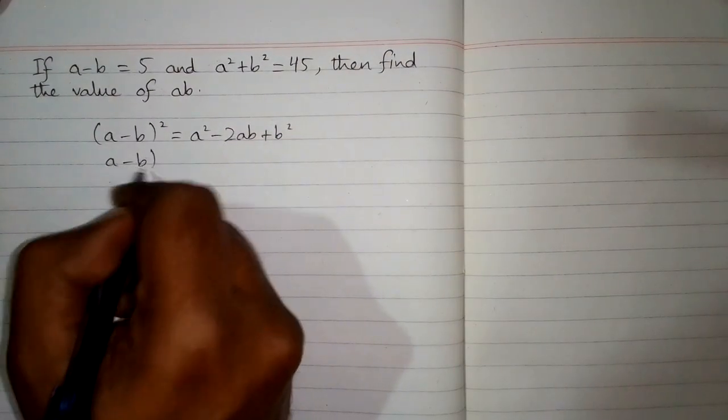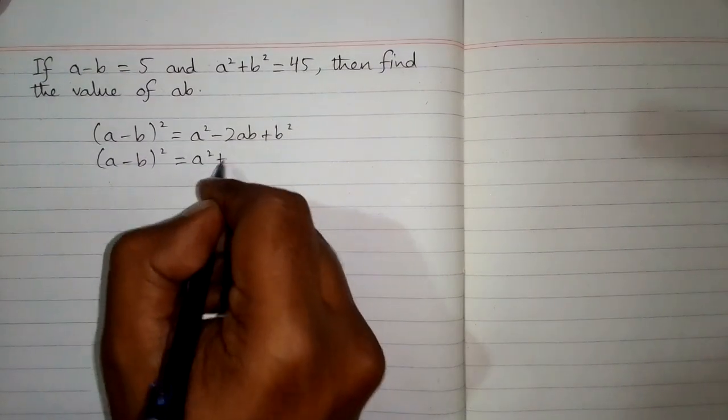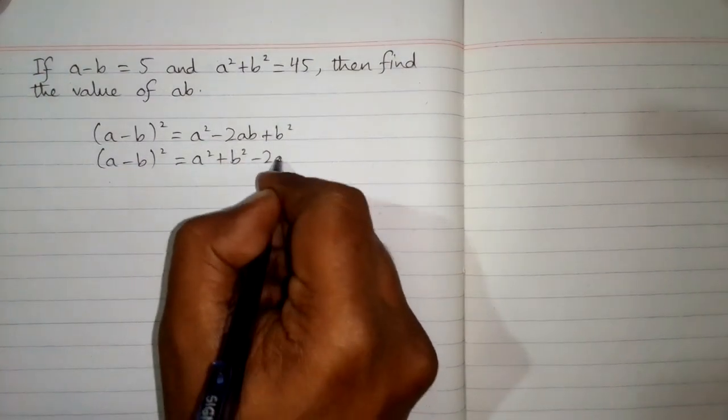This can be written as a minus b whole square is equal to a square plus b square minus 2ab.